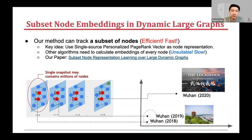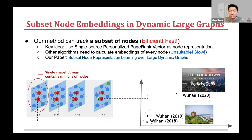As this example illustrates, our method can calculate embeddings of a specific node — in this case Wuhan — across different years. And we can expect a huge embedding movement from 2019 to 2020.